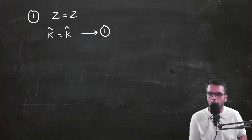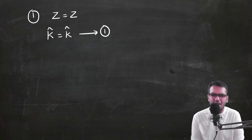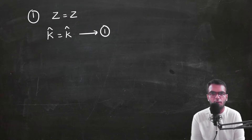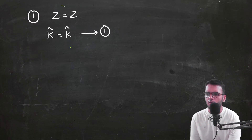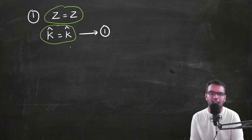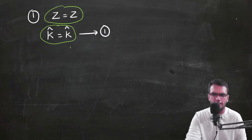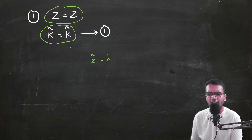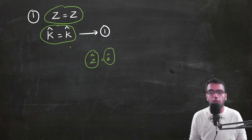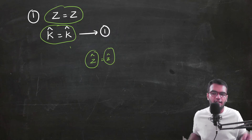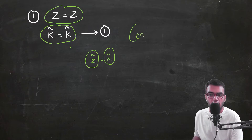First: have we made any changes to the height component? No. The height of a point is the same whether in Cartesian or cylindrical coordinates. So ẑ = ẑ, i.e., k̂ = k̂. The height is always the same in any coordinate system. So congratulations — one conversion is done.